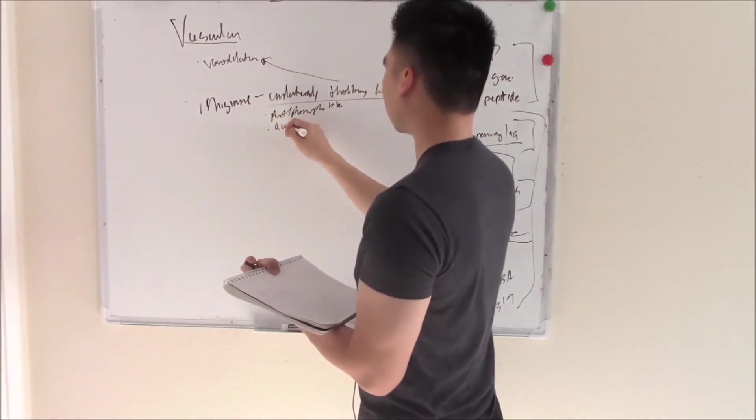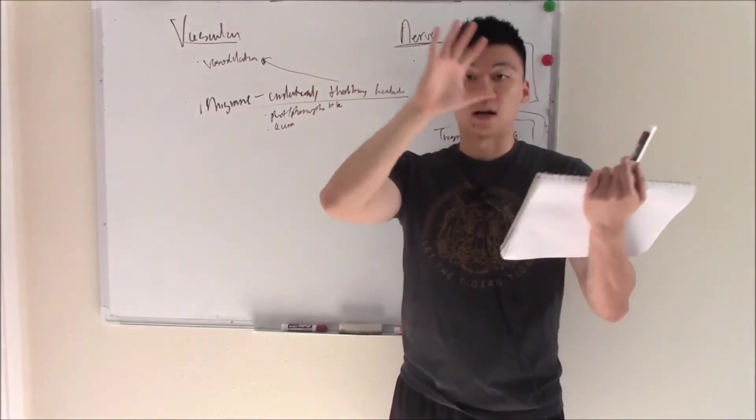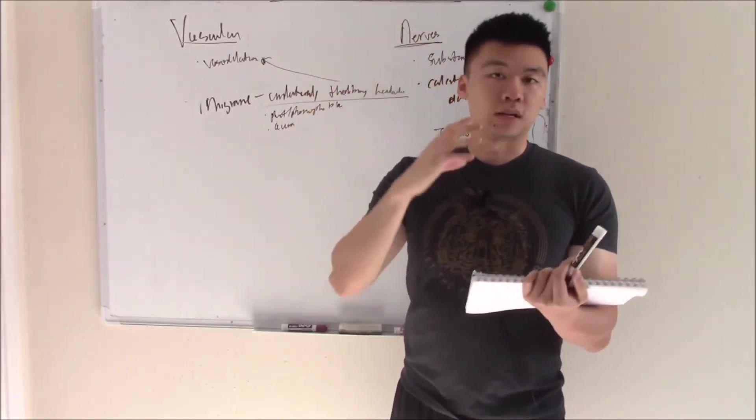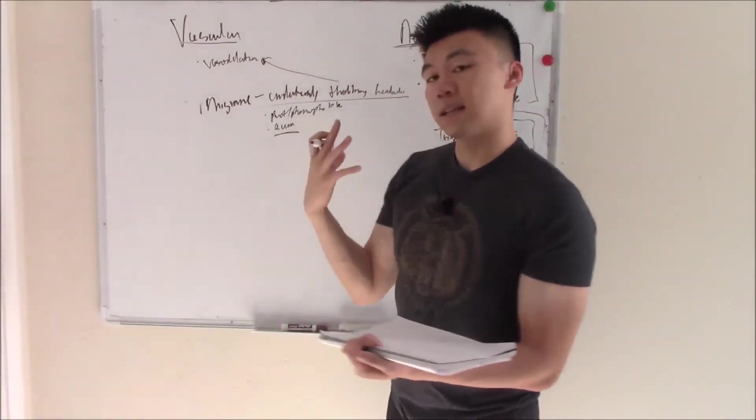They can have an aura. What the heck is an aura? It's a change in vision or smell. They might see like a bright light before they get their headache, or they might smell something before they get the headache and they kind of know it's coming on then. So they might have an aura that precedes the headache.